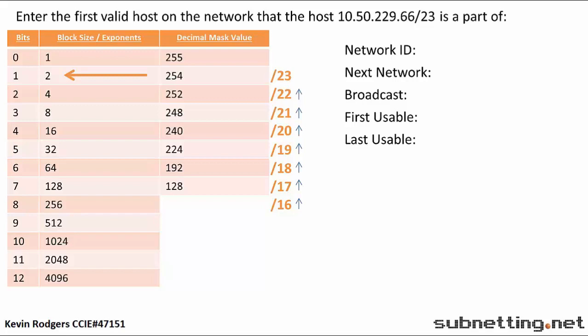Remember that we are working in the third octet. Now that we have the block size, we can find our network. To do that, we have to find the largest multiple of 2 that does not go over 229, which is our third octet in the IP address. In this case, we know that it is going to be 228. We can confirm: 2 times 114 is 228, whereas 2 times 115 would be 230, which is too much. This is just a simple way to find our network ID. The number 114 doesn't really mean anything — it only matters that it is an even number and the highest multiple of 2 that does not go over 229. You can achieve the same thing with division if you prefer. We now have our network ID, which is 10.50.228.0.